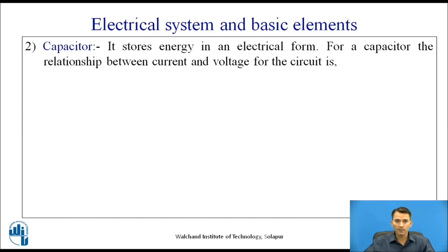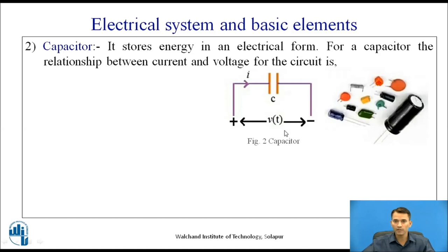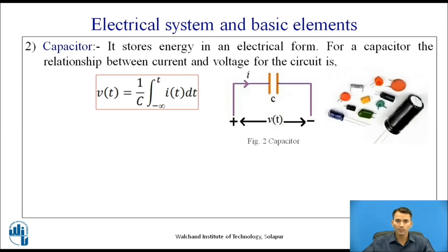The second basic element is the capacitor, which stores energy in an electrical form. For a capacitor, the relation between current and voltage is given by V(t) = (1/C) ∫ from −∞ to t of I(t) dt, or equivalently in terms of current as I(t) = C × d/dt [V(t)].